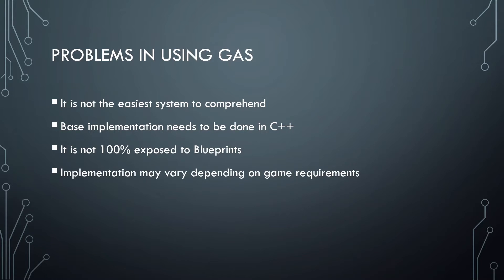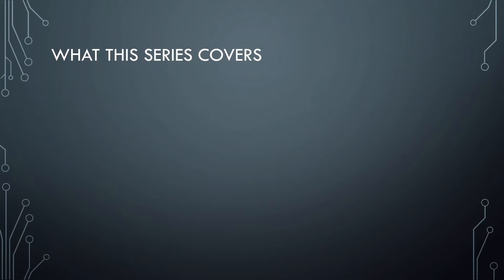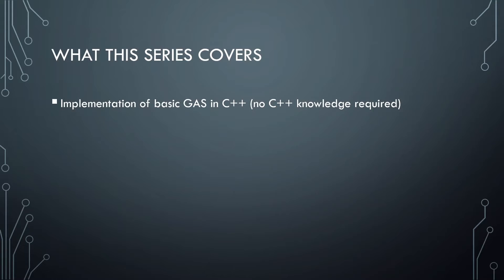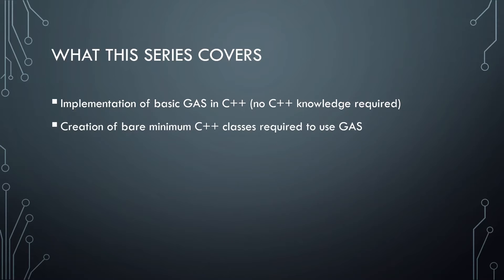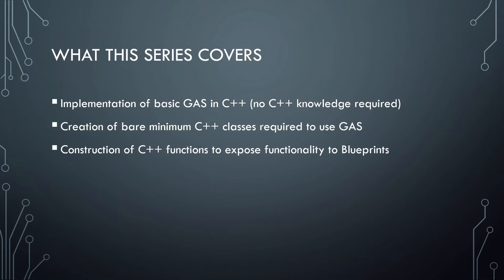The implementation may vary from game to game because this is a framework, not a hardcoded system for RPGs or shooters. It's a framework you can customize and extend to your own requirements. In this series we're going to implement the basic Gameplay Ability System in C++. We'll create helper C++ classes required by GAS — like the attribute set, gameplay ability base class, gameplay effect classes, and gameplay cues. We'll also create helper functions to expose GAS functionality to blueprints so you can call them in blueprints without ever touching C++ again.